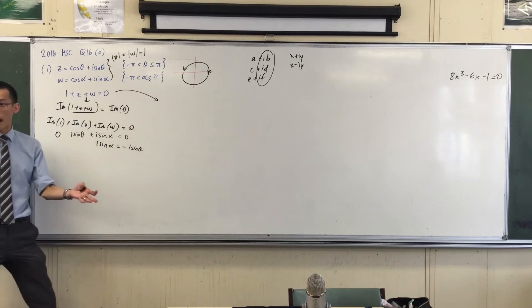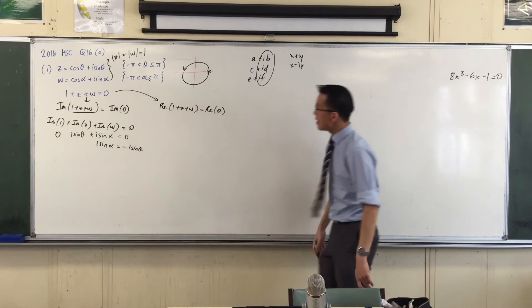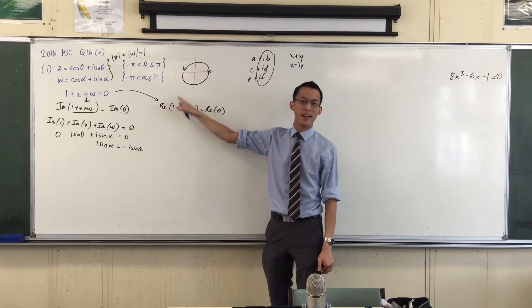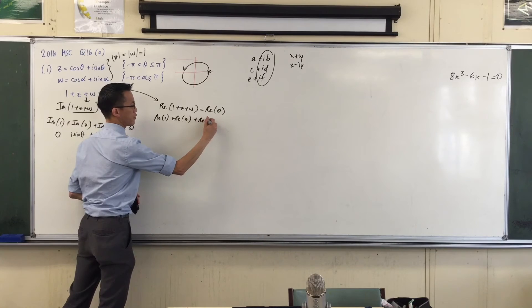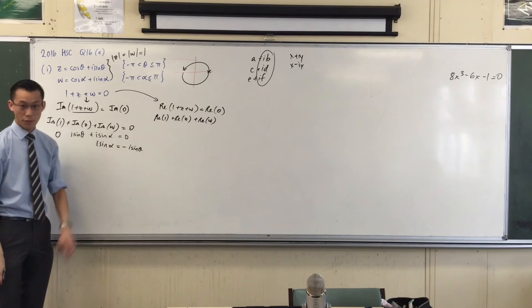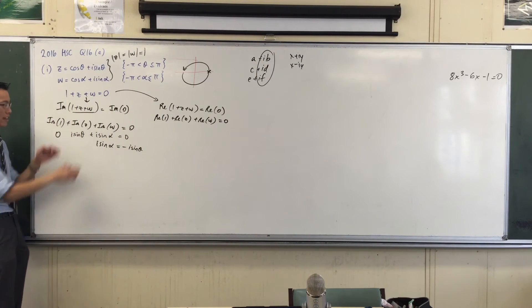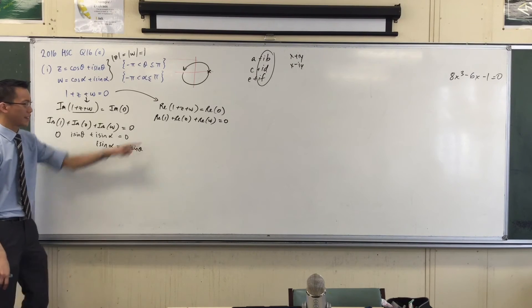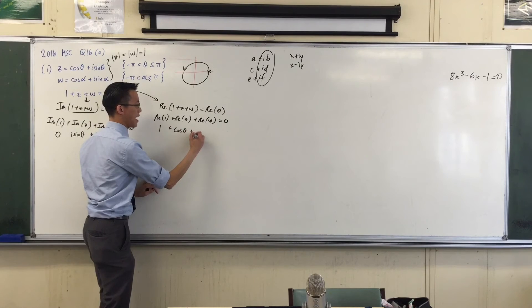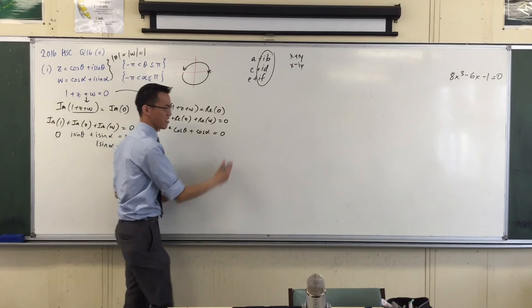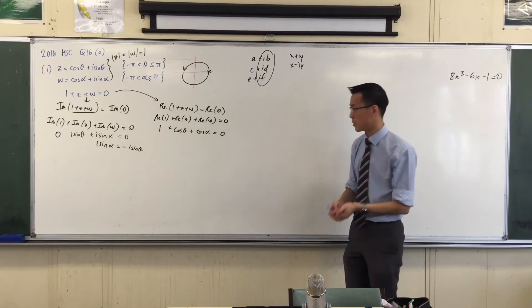The imaginary part worked so well. Instead of doing the imaginary part of both sides, let's say what's the real part of both sides. In exactly the same way, the real part of a sum is the sum of all the real parts individually. So I can write that down: it's the real part of this one, the real part of this one, and the real part of that one. The real part of the origin is also zero. The real part of one is one, real part of Z is cos θ, and the real part of W is cos α.